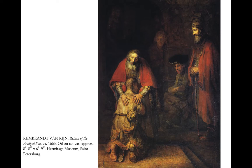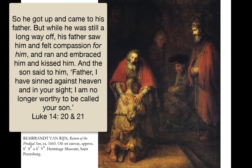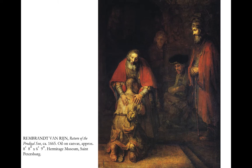The Return of the Prodigal Son is one of Rembrandt's later paintings, from Luke 15. It's a parable about salvation — a popular topic in art history, but arguably the best version of them all. This is a beautiful, quiet painting where all action is suspended. This is the opposite of the Samson painting we looked at earlier.